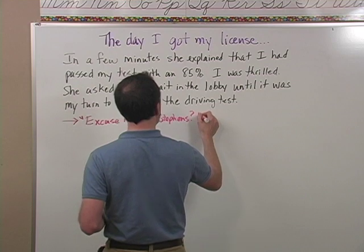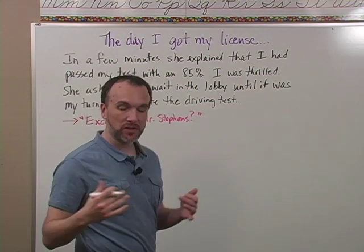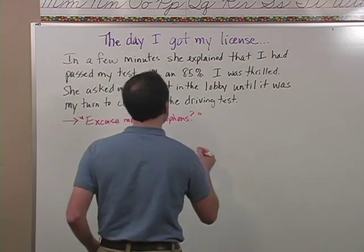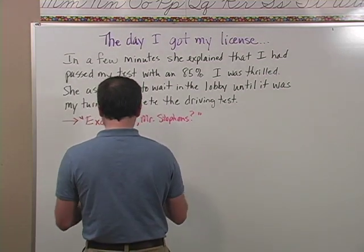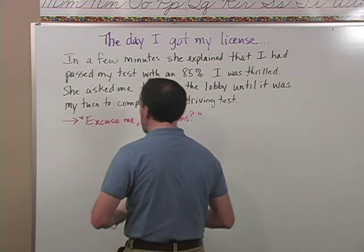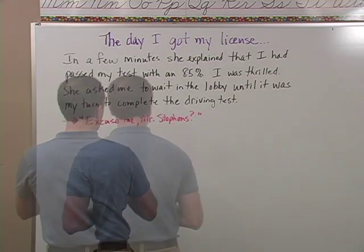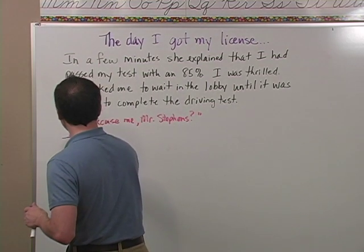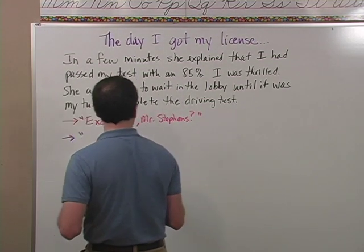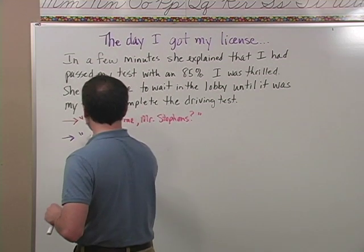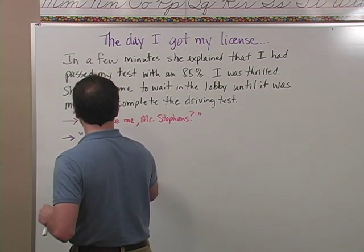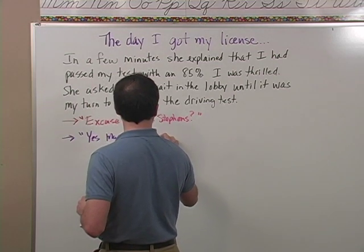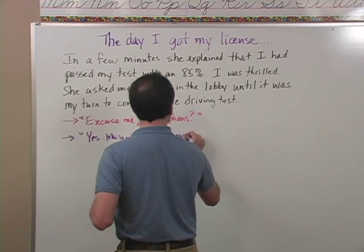'Excuse me, Mr. Stephens?' — and there's a question mark there because it's said as a question: 'Excuse me, Mr. Stephens?' Now I'm ready to drop to the next line. I'm going to write in two different colors so you can see the two different people. Now it's me talking, so I drop to the next line and indent. 'Yes, ma'am,' I said, nearly running to the counter. That shows my excitement.